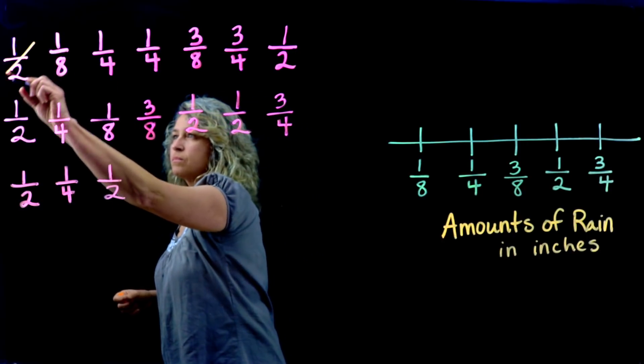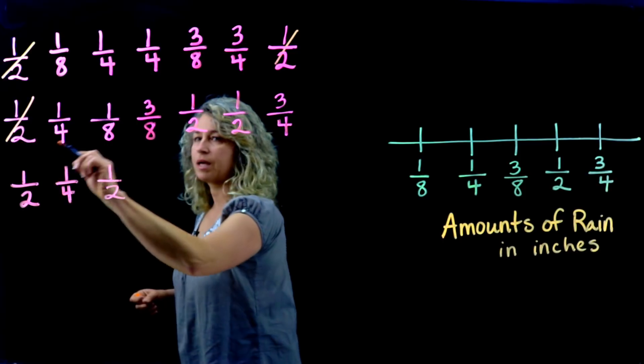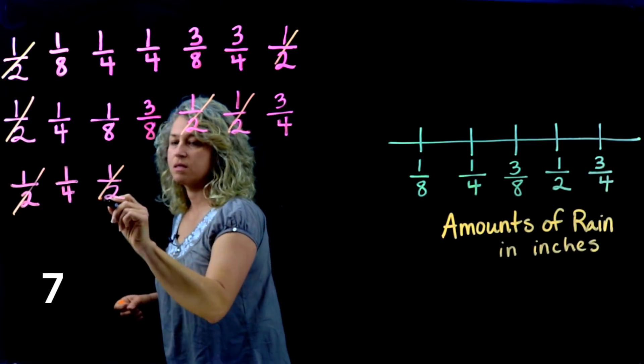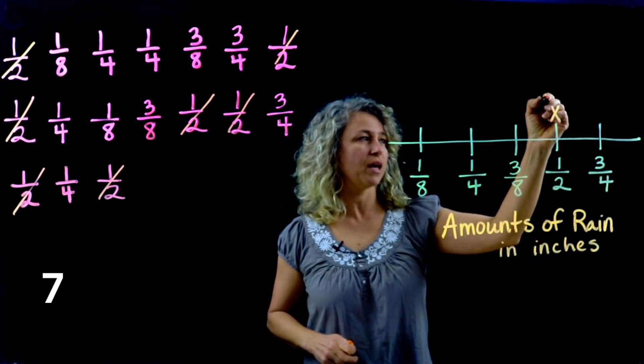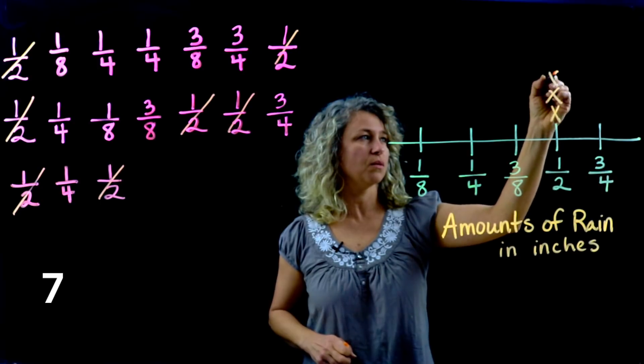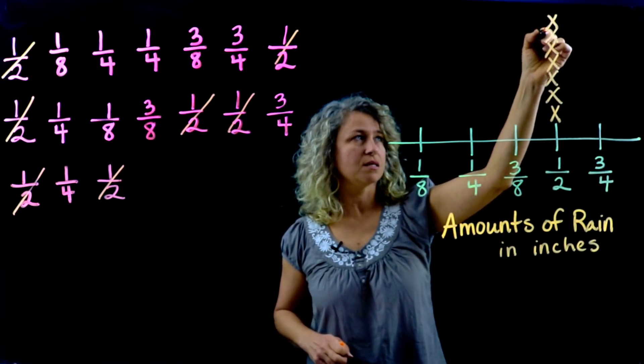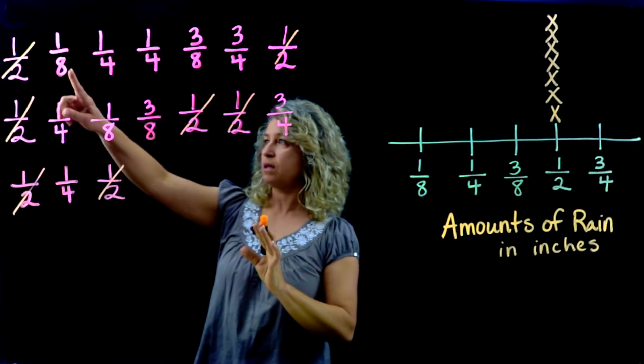As we do it, we're going to cross them off so that we won't recount them: 1, 2, 3, 4, 5, 6, 7. So go over to the line plot and we're going to have seven X's: 1, 2, 3, 4, 5, 6, 7.